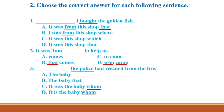Time's up. Let's check the answers. Number one: 'I bought the golden fish.' Subject and object are present, so we need the adverbial. Eliminate B and C because they contain 'where' and 'which,' which are not in the cleft sentence formula. Between A and D, we need 'from' because we're saying 'I bought this fish from a shop,' so the answer is A.